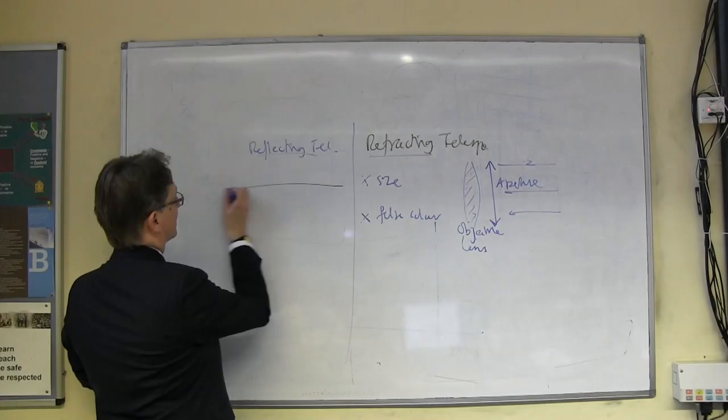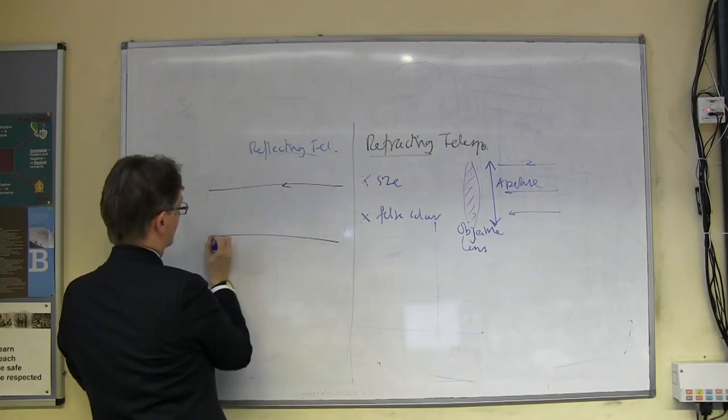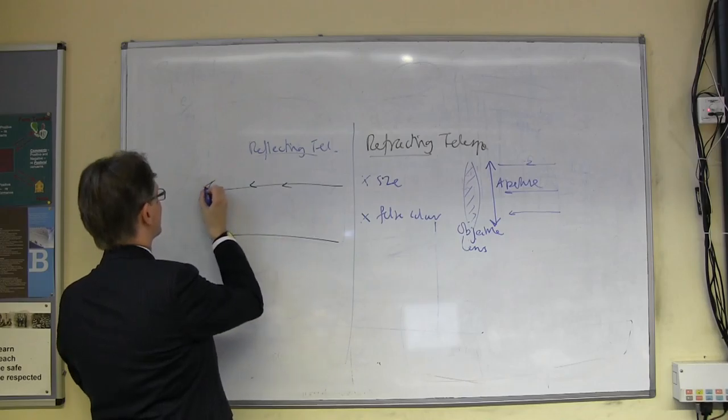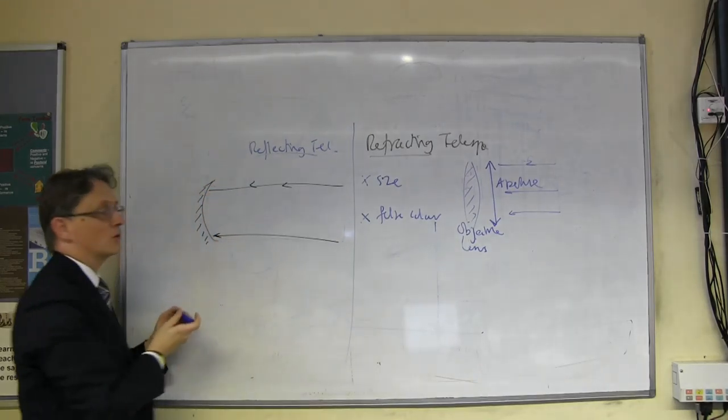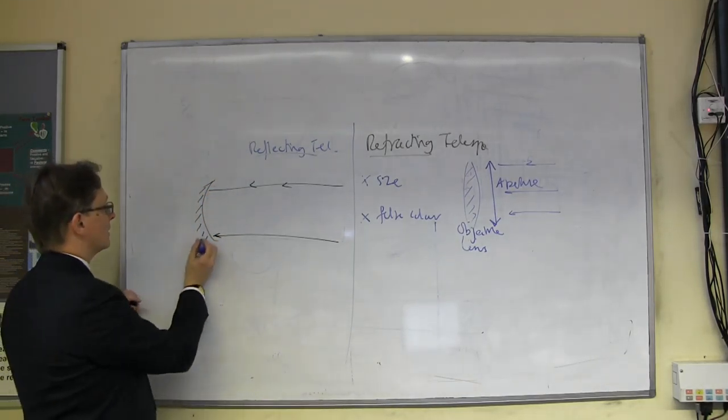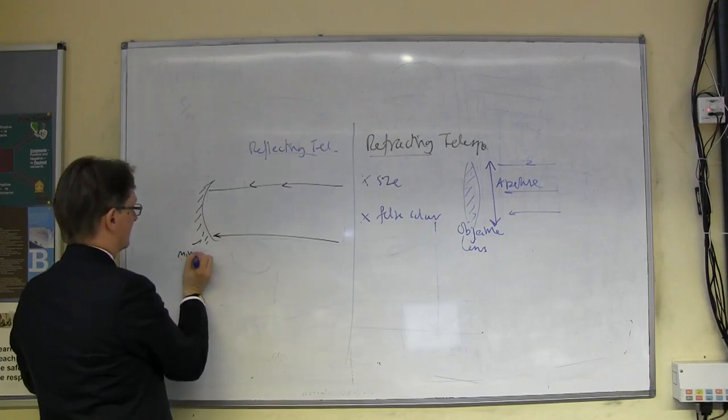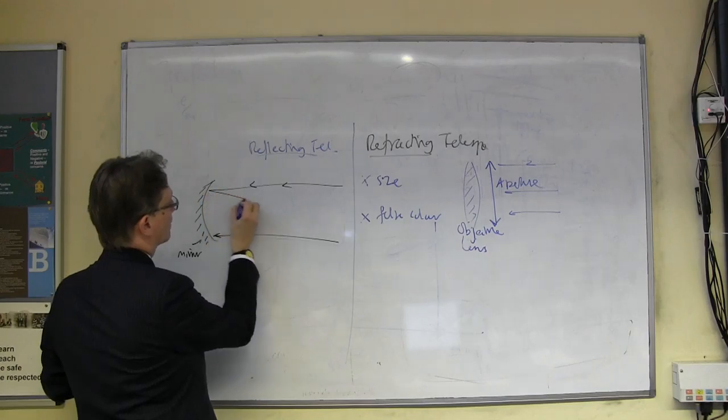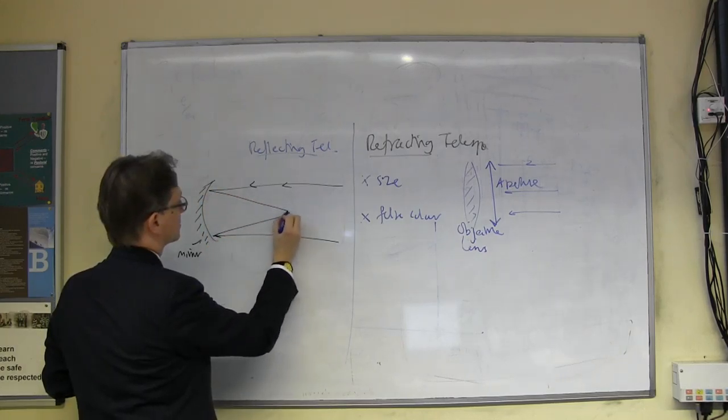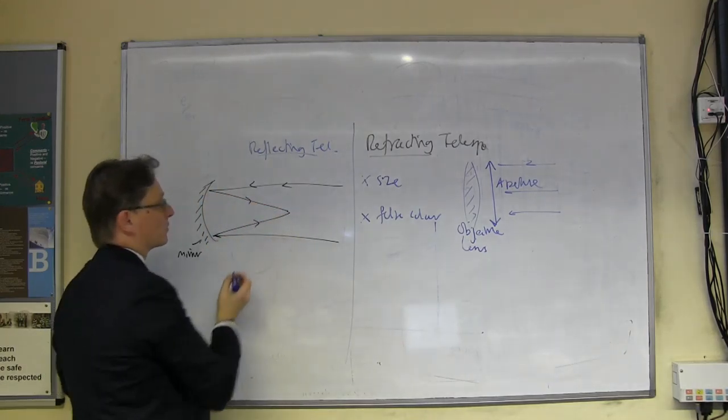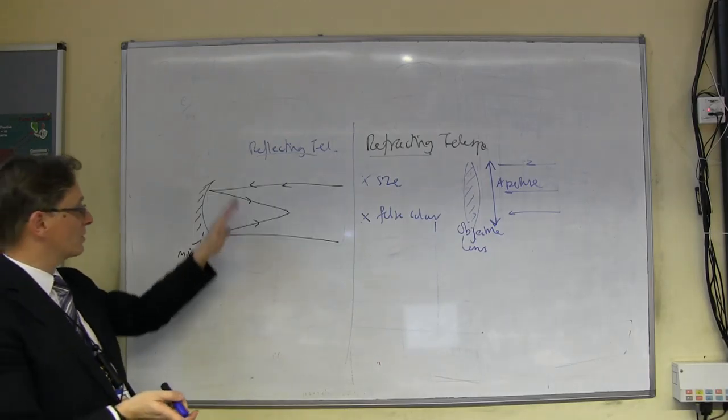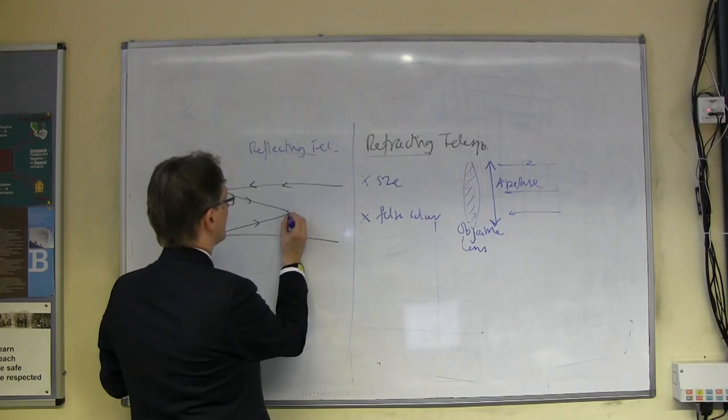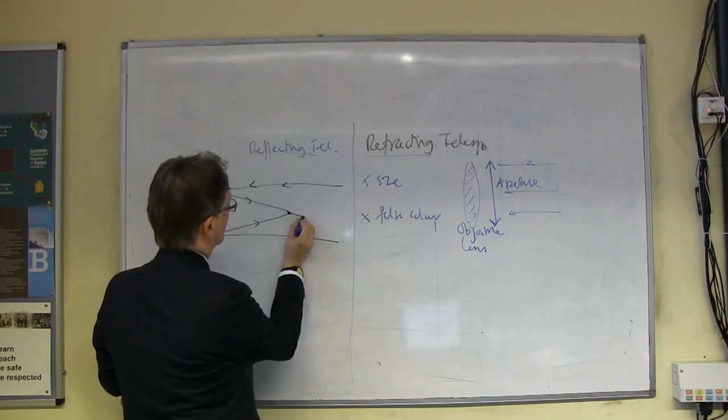You've got your starlight coming in like this, so here's the light from a distant star coming in. It goes down to the back of the telescope normally, where it hits a concave mirror. This is, obviously, a mirror, and it reflects the light. Ordinarily, it would reflect it down to a focal point, just like a convex lens, a concave mirror reflects light down to a focal point.